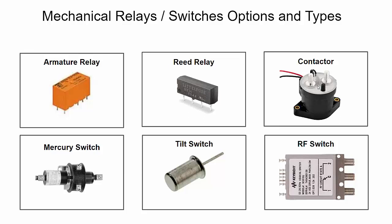Here are some mechanical relay options and common types - this list isn't meant to be exhaustive but covers the common ones. The most common are armature relays and reed relays, which range in different power, voltage, and current levels. Armature relays are typically made to handle higher voltages and current than reed relays. The advantage of reed relays is they're often smaller and faster - they have less of a delay when engaging or releasing - but their power handling capability is typically not as high as armature relays.